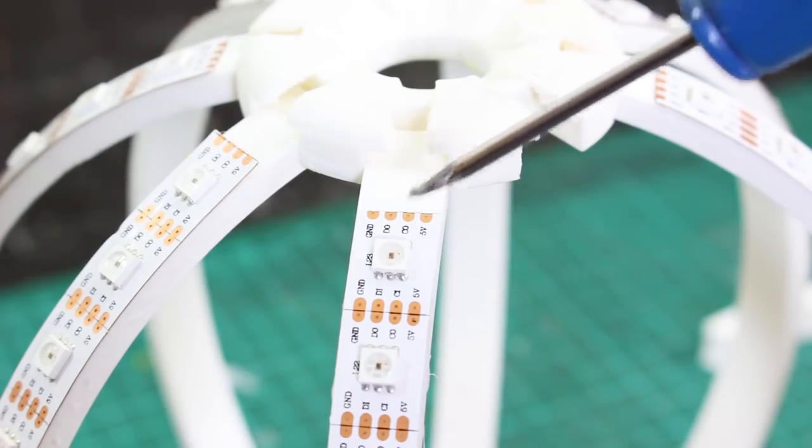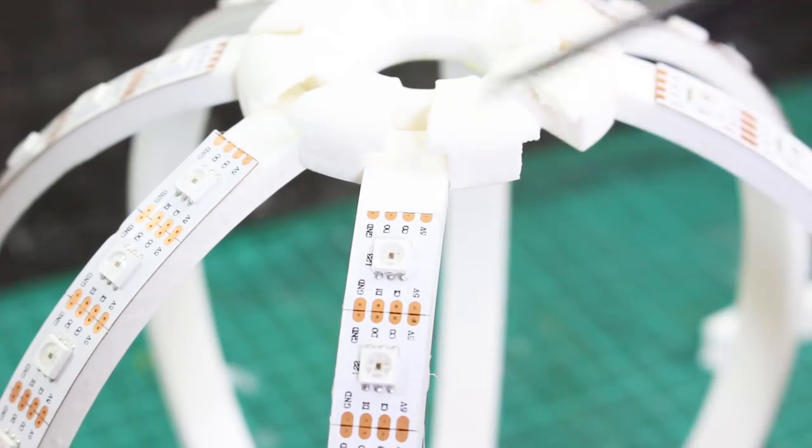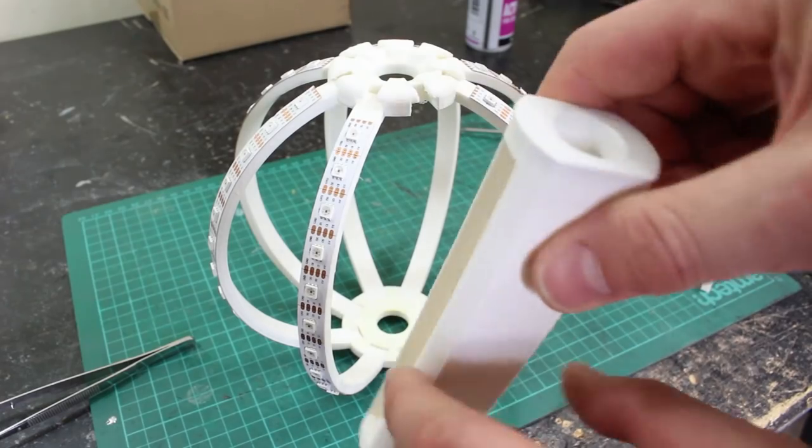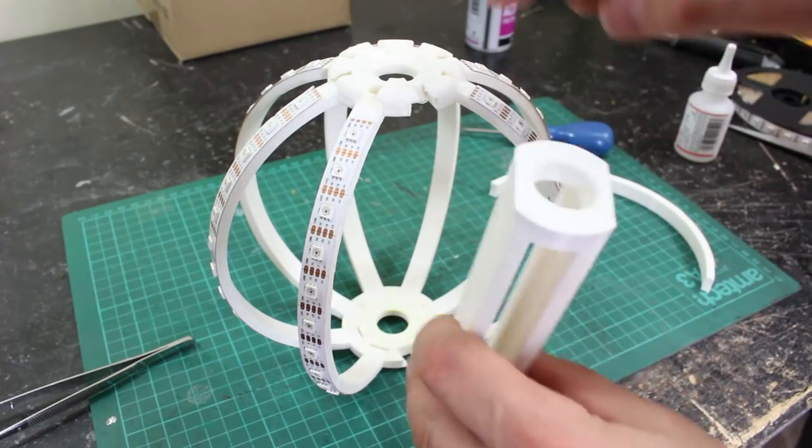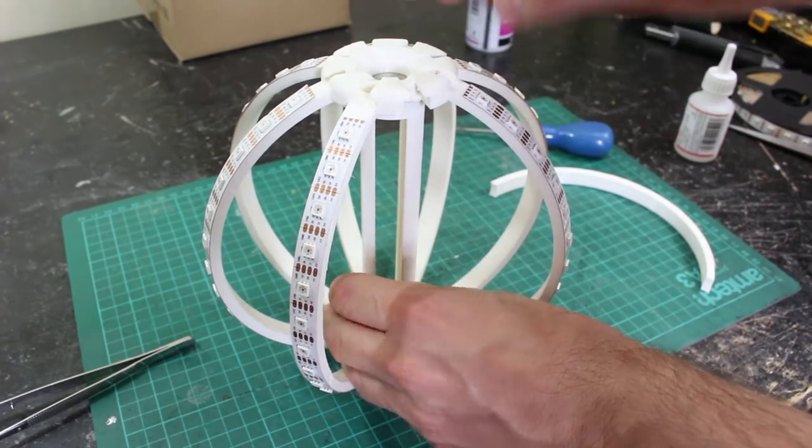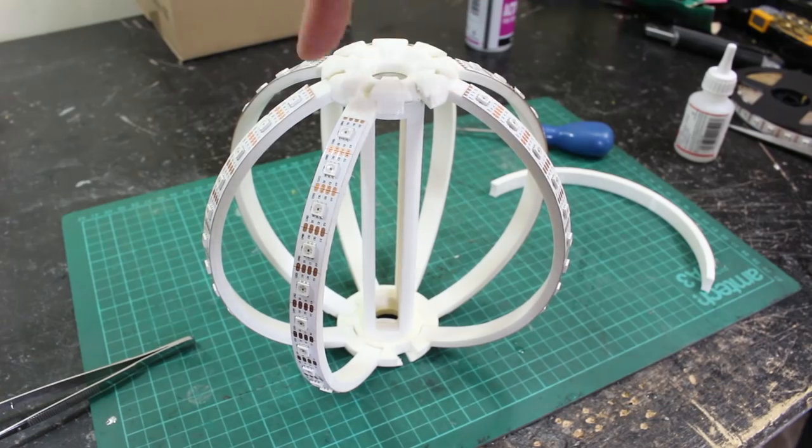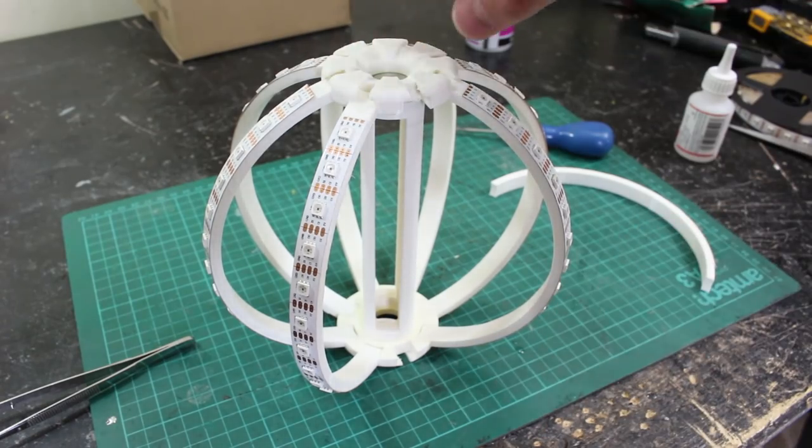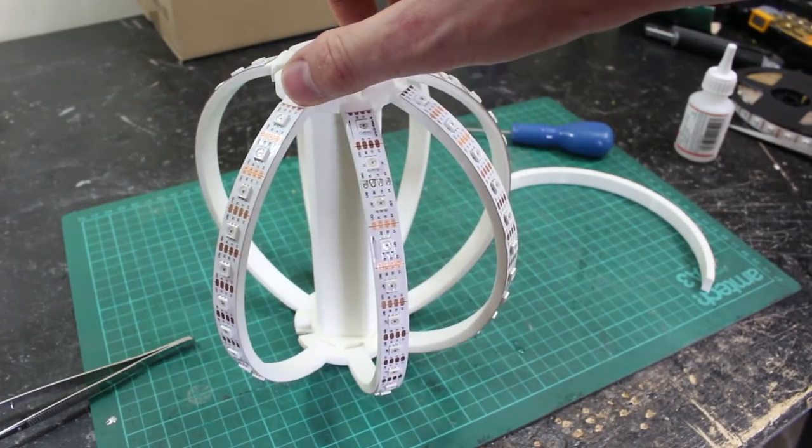So we need to daisy chain all of these strips so the ins go to the outs and then we'll get one long strip of LEDs. And to help with that, I've made this stick, which has got a slot in it and a hole all the way through and that neatly fits in the middle there so that we can run the wires down because we need to go from top to bottom on each one. You can also use that stick to mount the electronics on.